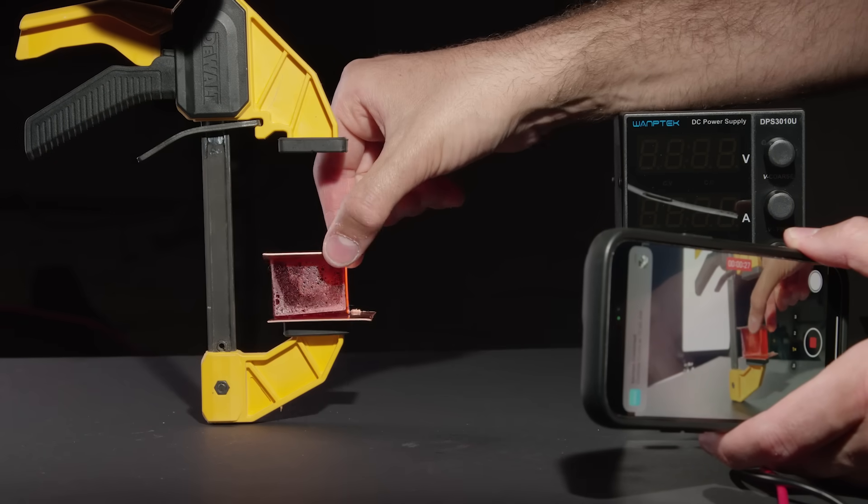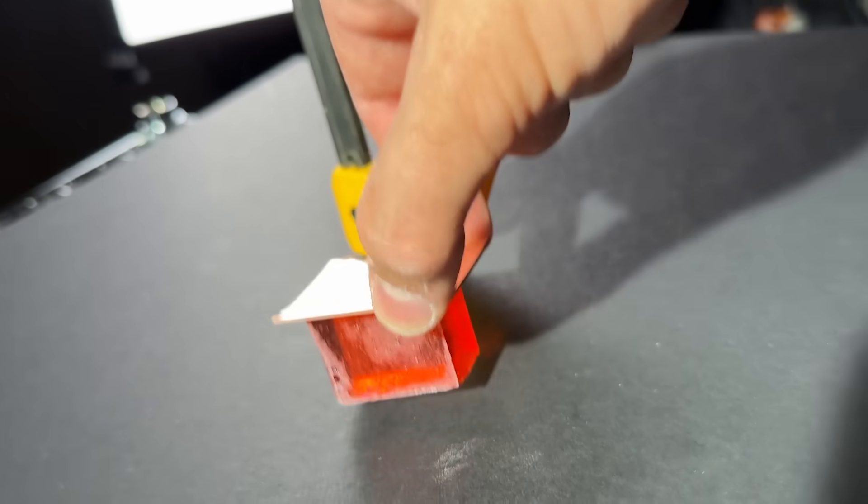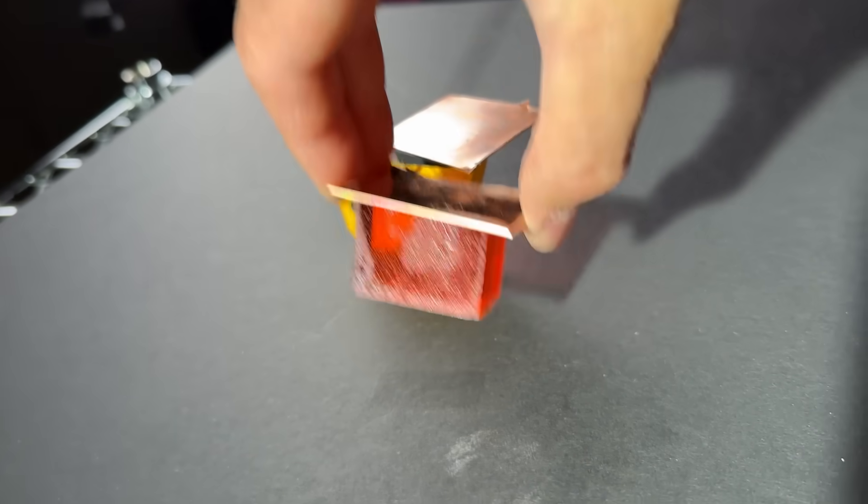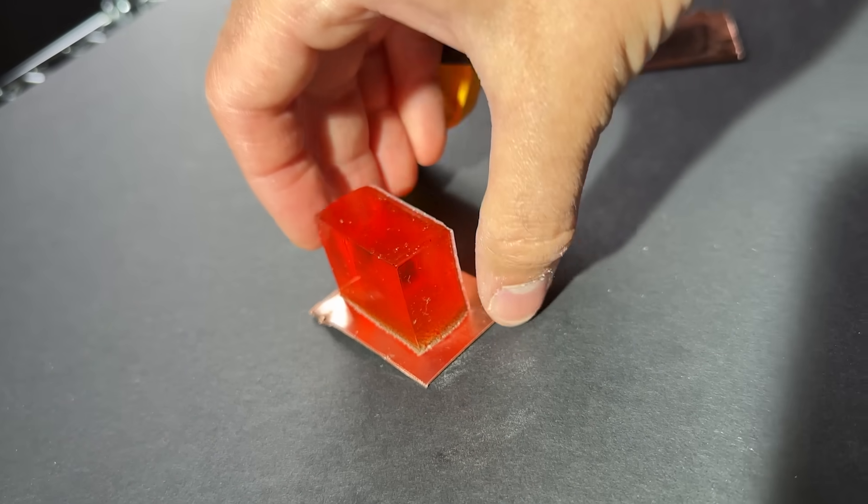And again, one side sticks, the other does not. Okay, bottom did not stick at all. This is reasonably well stuck on. You can see I'm trying to get it off and it's not coming off. But that's not even the magic part.